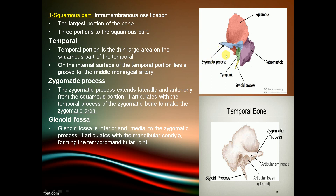The zygomatic process extends anteriorly and laterally from the squamous portion and articulates with the temporal process of the zygomatic bone to form the zygomatic arch. The glenoid fossa is inferior and medial to the zygomatic process and articulates with the mandibular condyle, forming the temporomandibular joint.